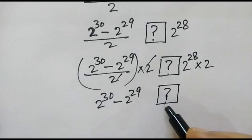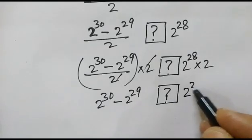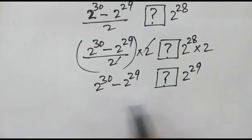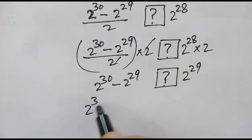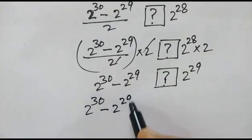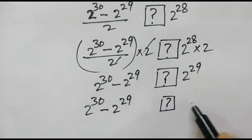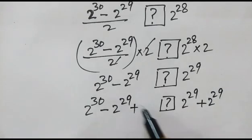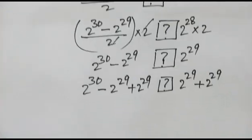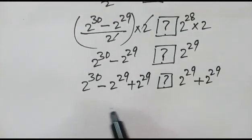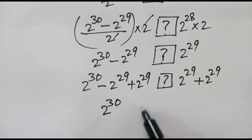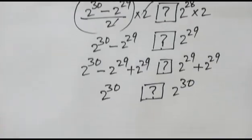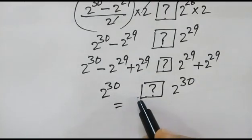What is the relationship? We get 2 to the power 29. Now we will add 2 to the power 29 on both sides. So we have 2 to the power 30 on one side, and 2 to the power 29 plus 2 to the power 29 on the other, giving 2 to the power 30. The relationship is equality.